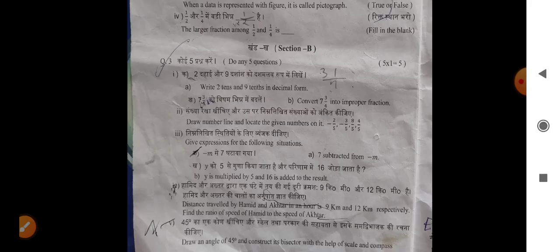Write 2 tenths and 9 tenths in decimal. Convert 7.3.4 into improper fraction. The number line and locate the given number on it.